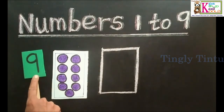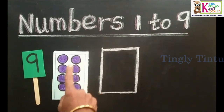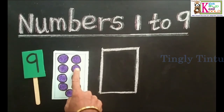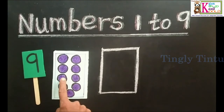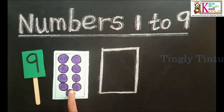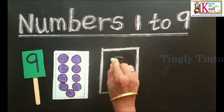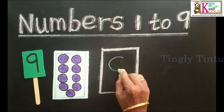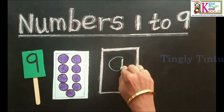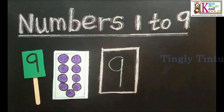9. 1, 2, 3, 4, 5, 6, 7, 8, 9. 9 candies. C pattern. Go up, come down. 9.